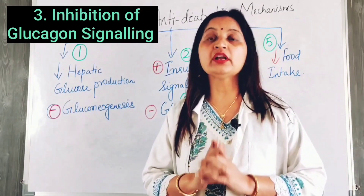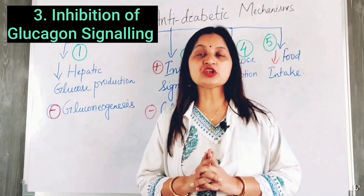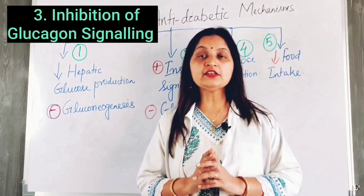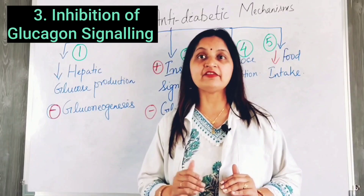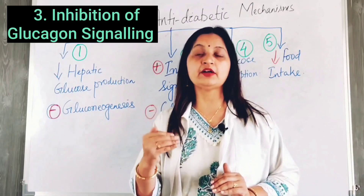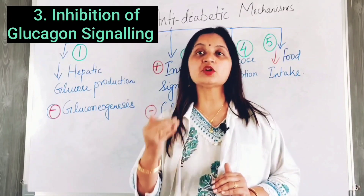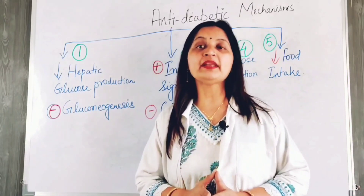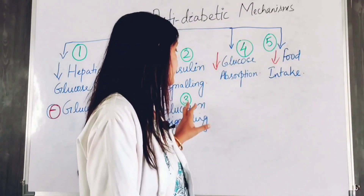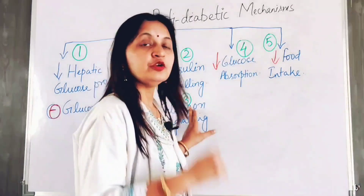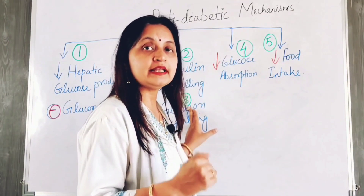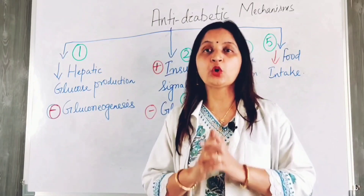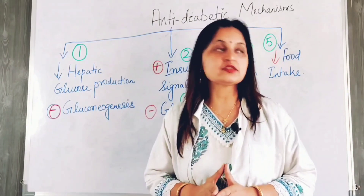The third mechanism is inhibition of glucagon signaling. Glucagon is a counter-regulatory hormone whose actions are opposite to that of insulin. While insulin lowers the blood glucose level, glucagon increases it by enhancing glucose production by the liver. Metformin, by inhibiting glucagon signaling, reduces glucose production by the liver, helping to lower blood glucose levels and maintain glucose homeostasis.